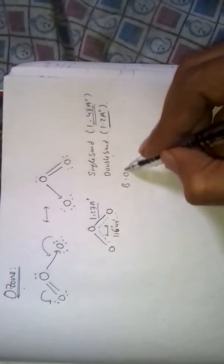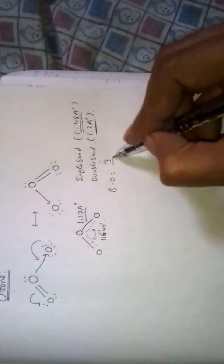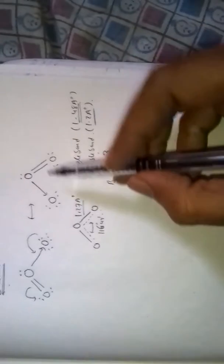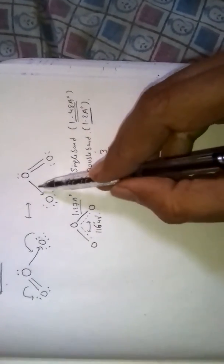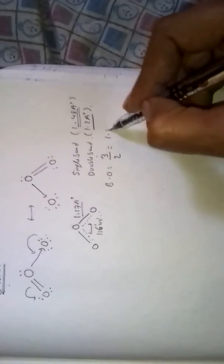So bond order of ozone is equal to number of bonds, 3, by number of atoms, 2. Here 2 atoms form 3 bonds. So bond order 3 by 2 equals 1.5.